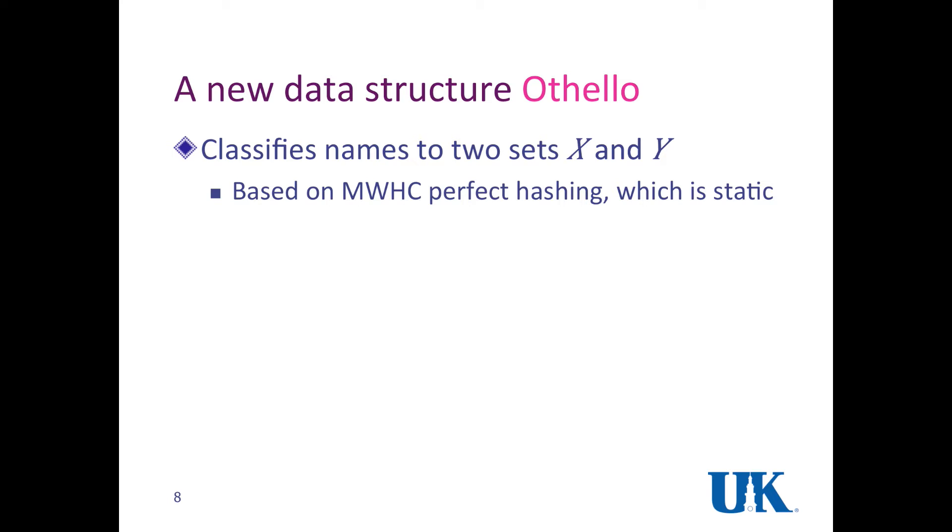However, this hashing is static, but in networks we need a dynamic structure. So we need some changes on this original structure. The query, if the query results of Othello is zero, it means that the key or the name is in set X. Otherwise, it's in set Y.